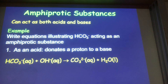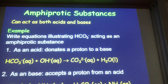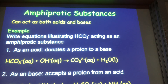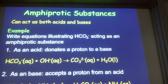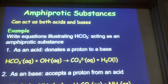To show hydrogen carbonate acting as a base, you pick an acid to react it with — in this case ammonium. Acting as a base, hydrogen carbonate must accept a proton, so it pulls an H⁺ off ammonium, turning into H₂CO₃. The ammonium loses a proton to turn into ammonia.